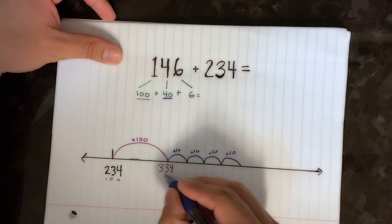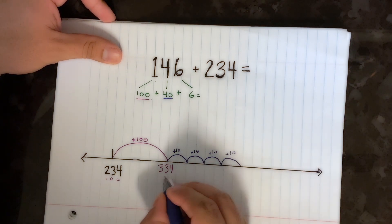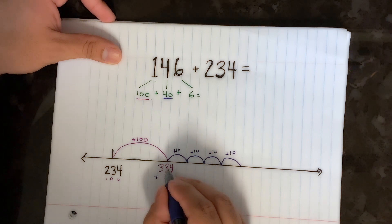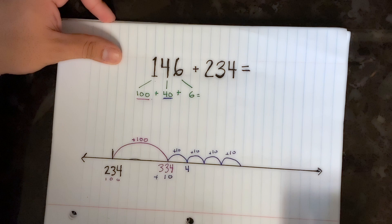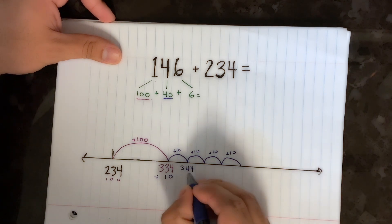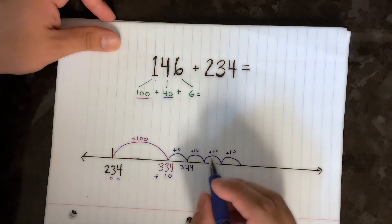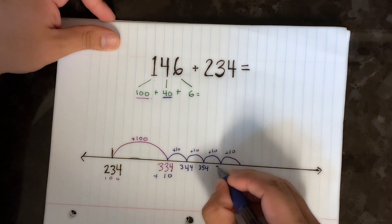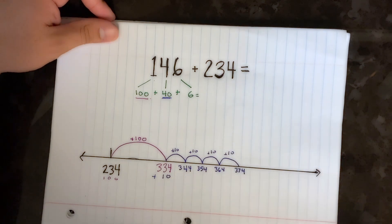You can just count by tens to see where we're at on the number line, or you can put a 10 underneath in our tens place: three plus one is four, and the rest of the numbers stay the same. So now we have 344 — counting the tens: 344, 354, 364, and lastly 374.